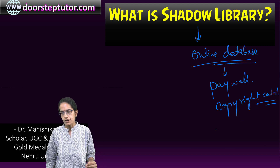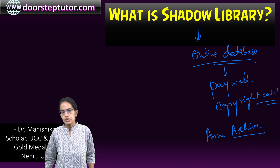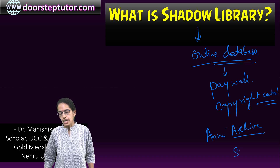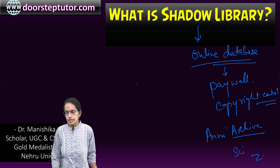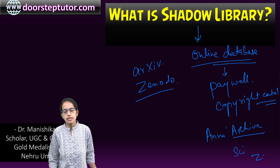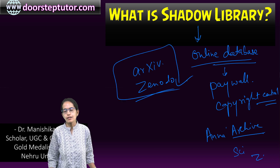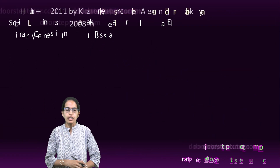Some of the major shadow libraries include Anna's Archive, which covers shadow library platforms like Library Genesis, Sci-Hub, and Z Library — we'll talk about each of these one by one. On the other hand, there are open repositories like arXiv and Zenodo, which bring content online and make it freely accessible for everyone.